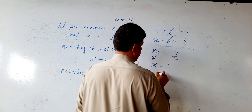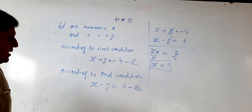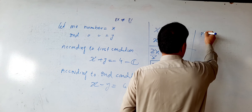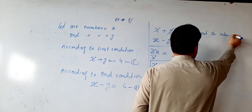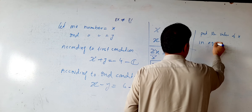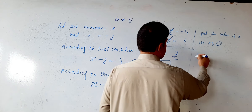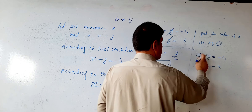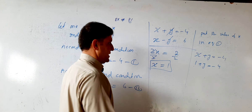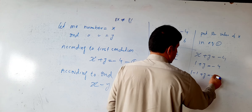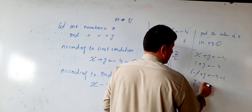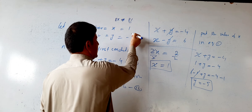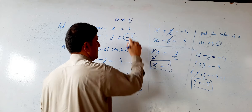Dividing both sides by 2, x = 1. Now substitute x = 1 into equation one: 1 + y = −4. Moving 1 to the right side: y = −4 − 1 = −5. So the two numbers are x = 1 and y = −5.